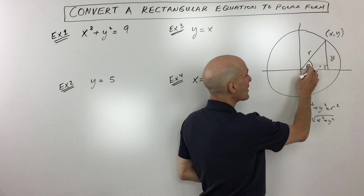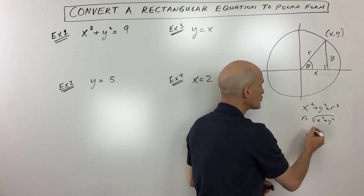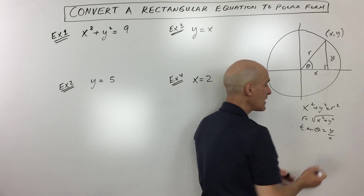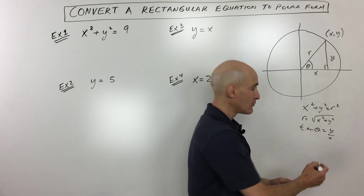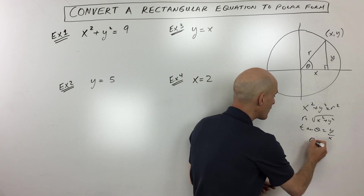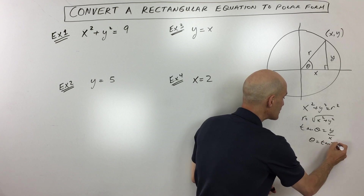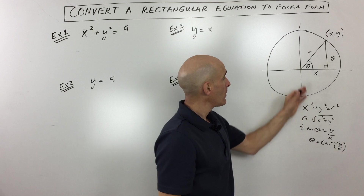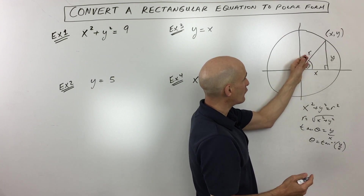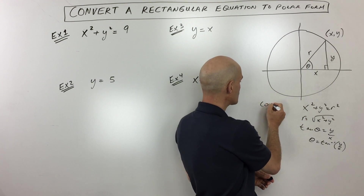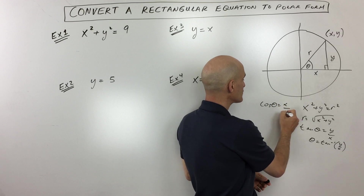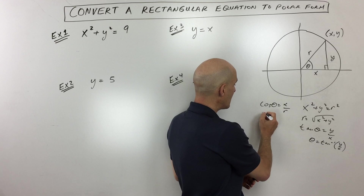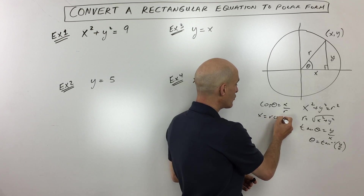Another connection to recognize is that tangent of theta equals y over x. If you take the tangent inverse of both sides, you get theta equals tangent inverse of y over x. Also, cosine of theta is adjacent over hypotenuse, so cosine theta equals x over r. Multiplying both sides by r, x equals r cosine theta.